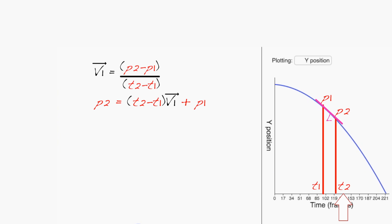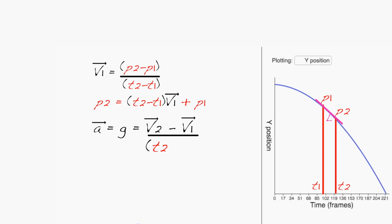But how do we get the velocity at time t2? Well, if we know the equation of motion, then we can compute the acceleration at time t2. For instance, if the particle is just being acted on by gravity, then the acceleration is constant and is given by the gravitational constant g. We also know that the acceleration is the slope of the velocity versus time curve, meaning gravity equals the change in velocity divided by the change in time. And we can solve this for v2.